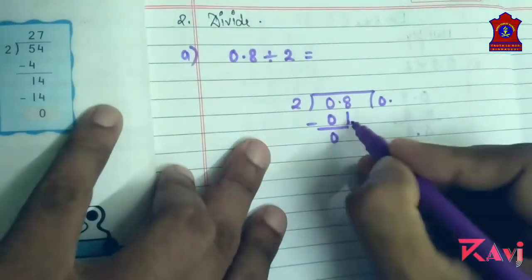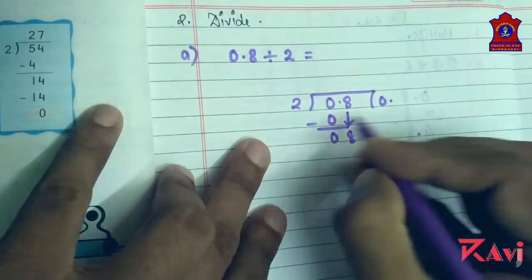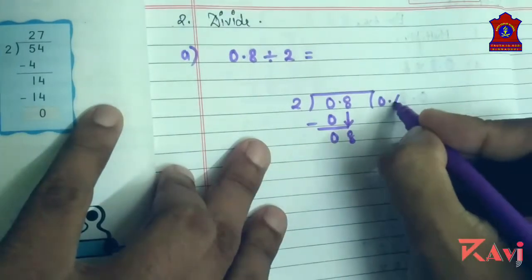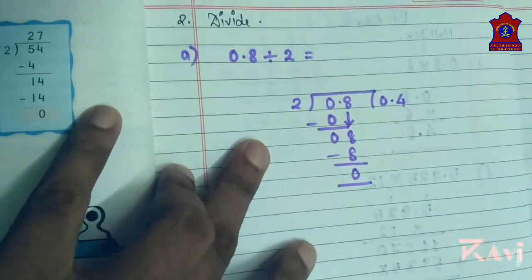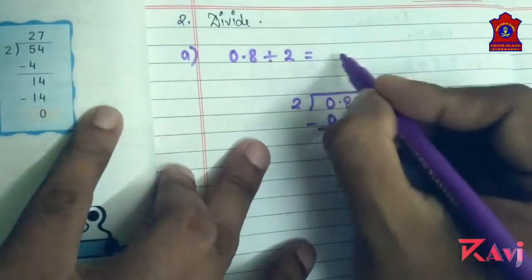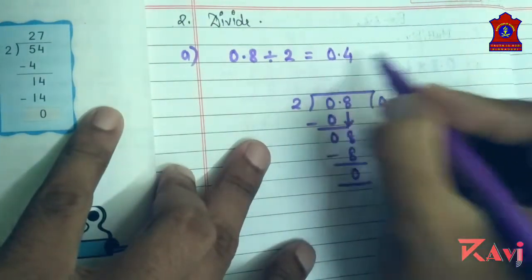What comes down? Eight. Two into what makes it? Two fours are eight. See, it is very simple. You have got zero as the remainder, so the answer will be 0.4. You will be writing it like this.